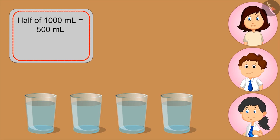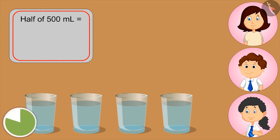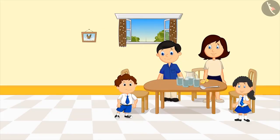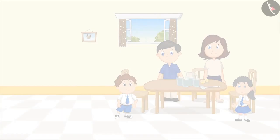Yes, Mom. Can you tell how much lemonade is in one glass? Half of 500 ml. Very good — so what's that? Kids, you can pause the video and think about the answer. We have to divide 500 by 2. 250? Very good, Bholu! Daddy, we all got 250 ml of lemonade.